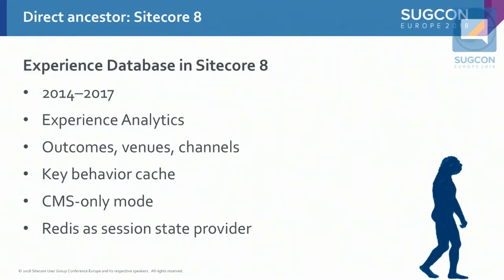Sitecore 8 was released in 2014 and was a gradual change compared to XDB in 7.5. It introduced the new reporting interface, Experience Analytics, which was much better than the old reports. It introduced some new marketing entities like outcomes, venues, and channels. Key behavior cache was a good performance improvement technique. You could now run Sitecore in CMS-only mode again — because in Sitecore 7.5, you couldn't really turn XDB off. And Redis as a session state provider was also introduced at some point in Sitecore 8.